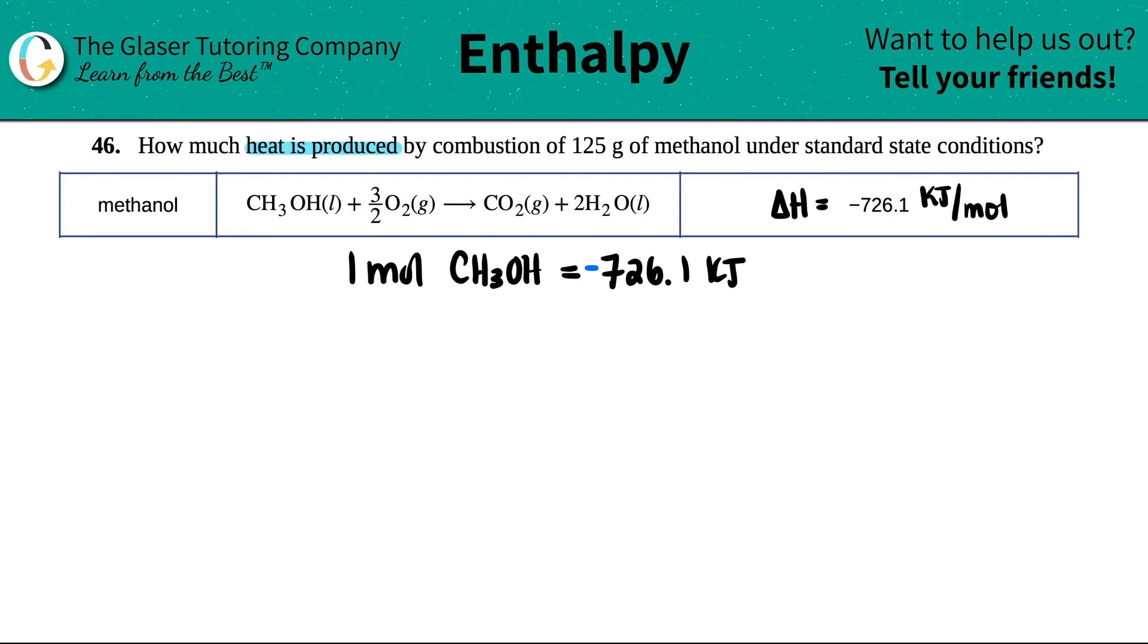Just so you know, delta H is called enthalpy. That's the topic of this part of the chapter. I like to think of enthalpy because there's an H here, so H goes with H. It always stands for the amount of heat being produced per one mole of the substance.